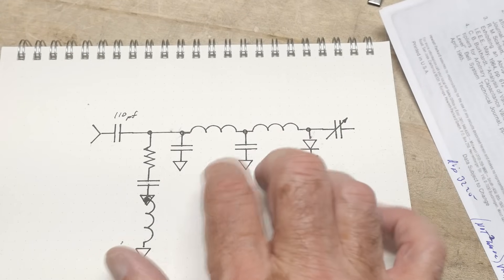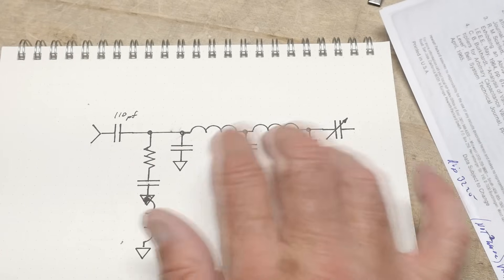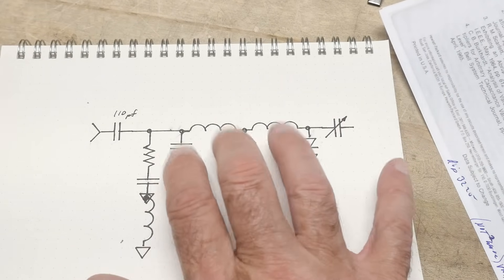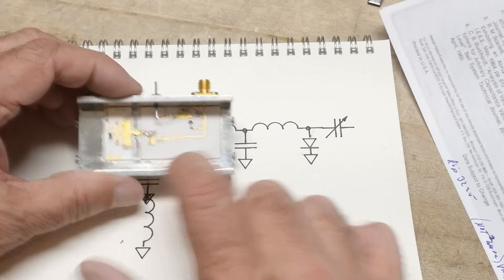And then it goes into this low pass filter which is capacitor inductor capacitor. And so that's these big guys over on the left.